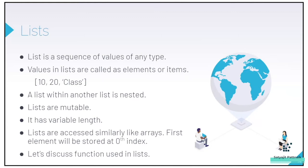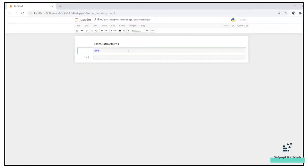When we talked about string operations and fetching the first character of a string, we used string[0]. Very similarly, if you want to access the first element of a list, you use list[0]. All operations like fetching a range — for example, [0:2] for the first two elements, or [-1] for the last item — remain the same. Let's understand more about lists and some functions used with them.